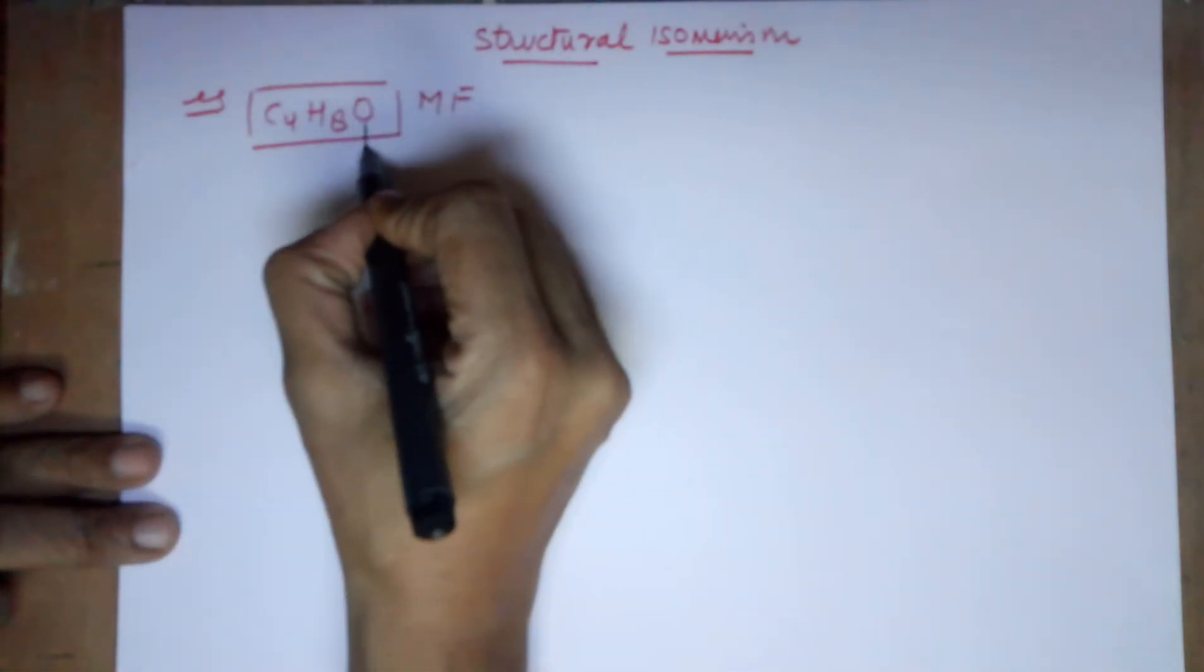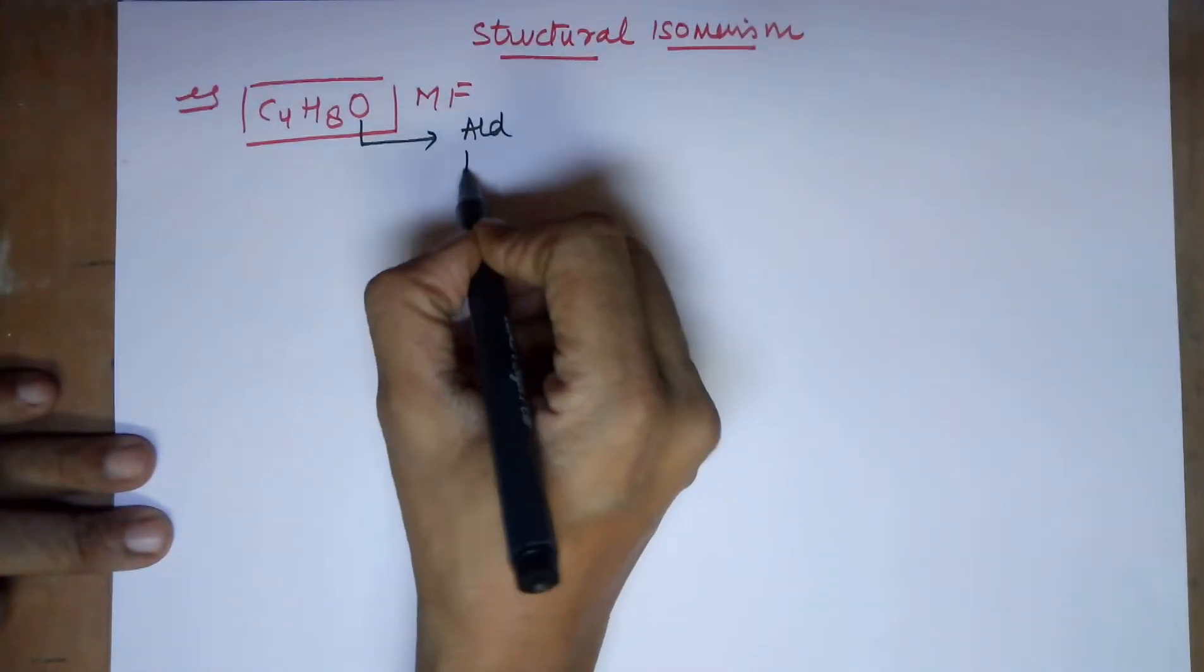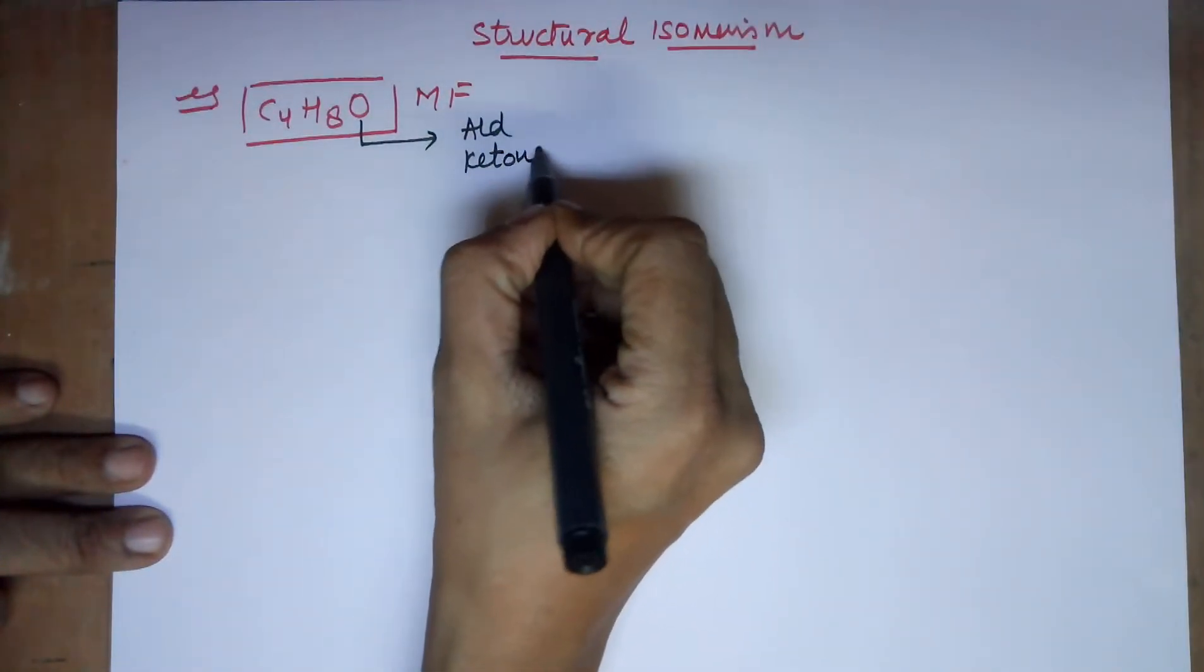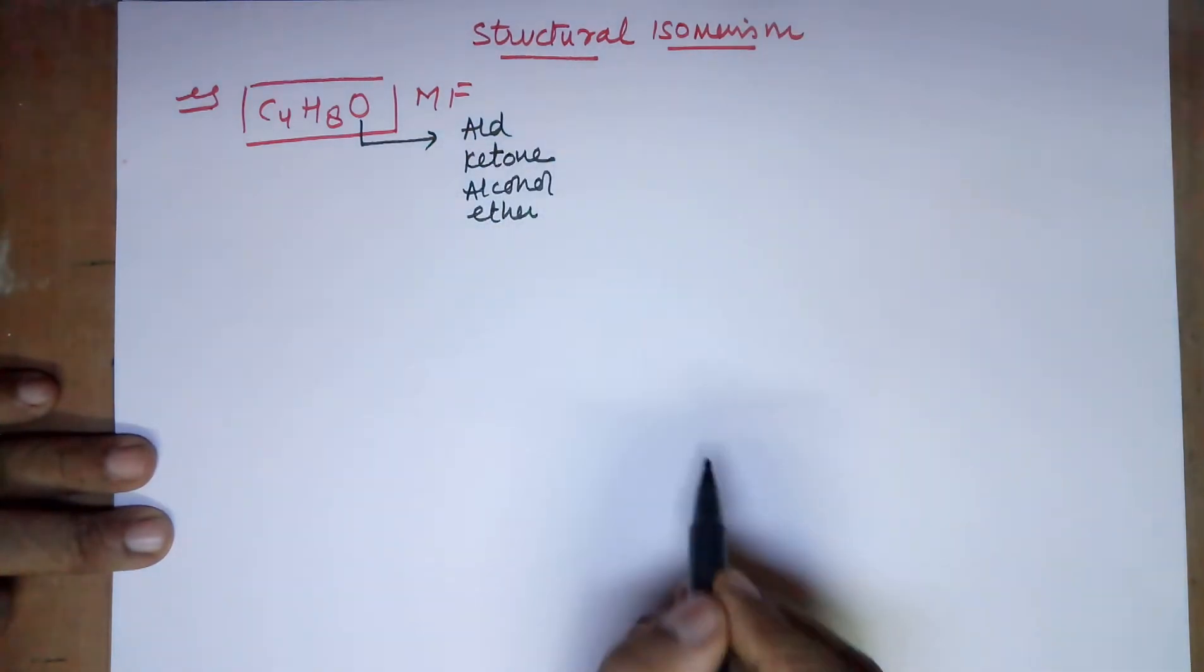Now as soon as you see a single O, you start thinking about the possibilities of the functional groups. Could be an aldehyde, could be a ketone, could be an alcohol, could also be an ether or it could be a combination.